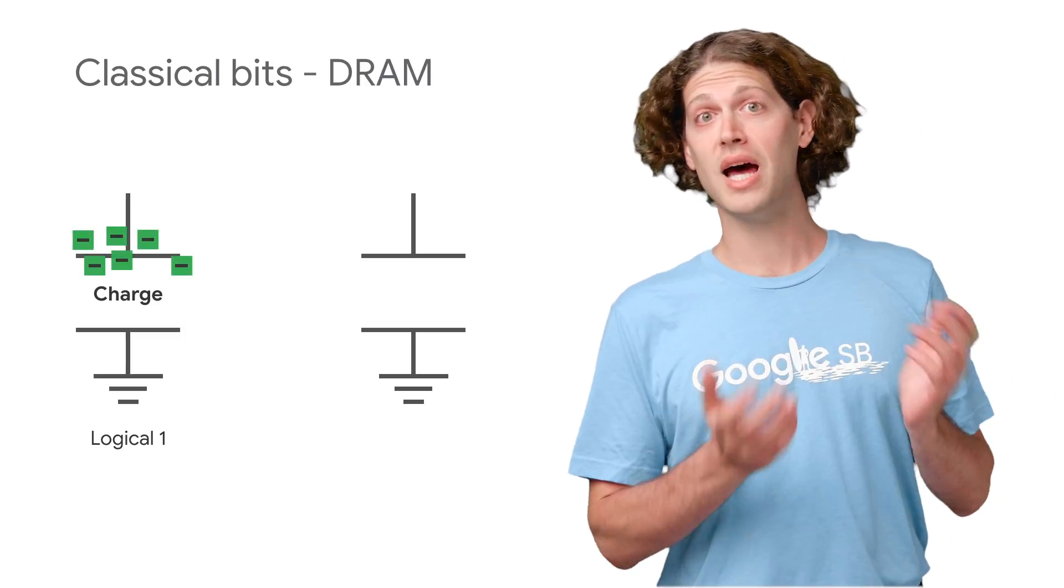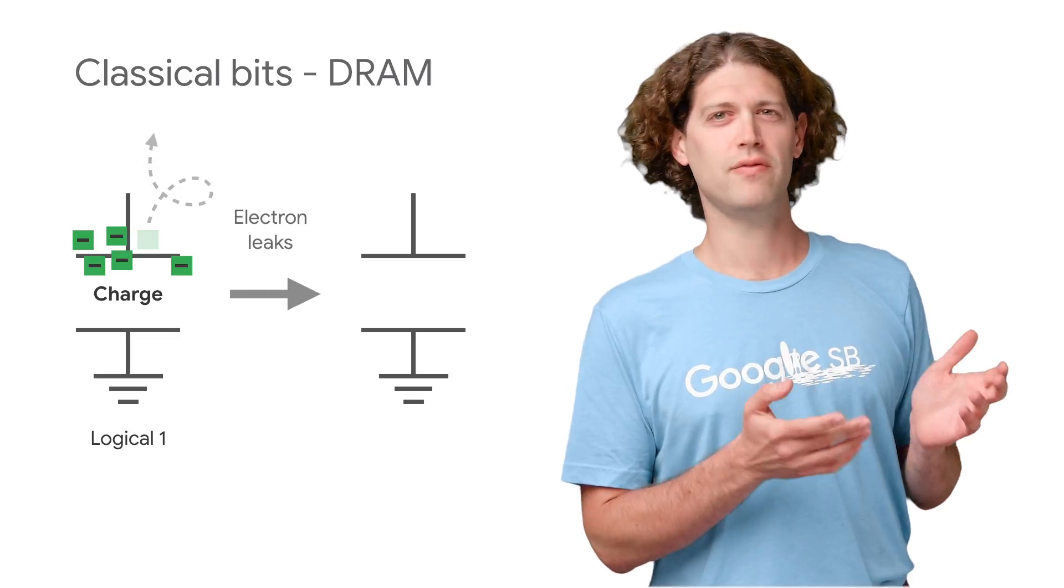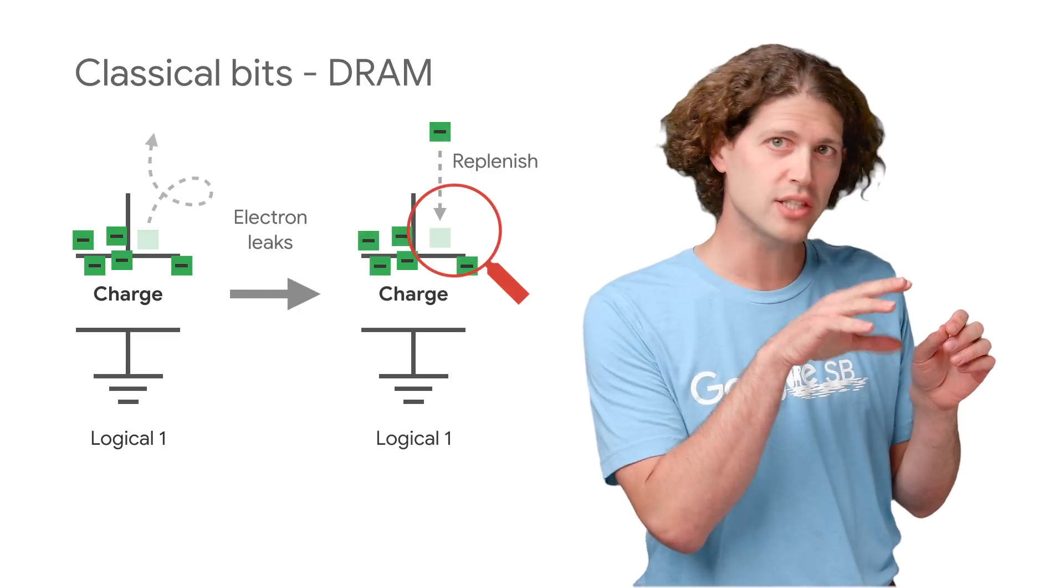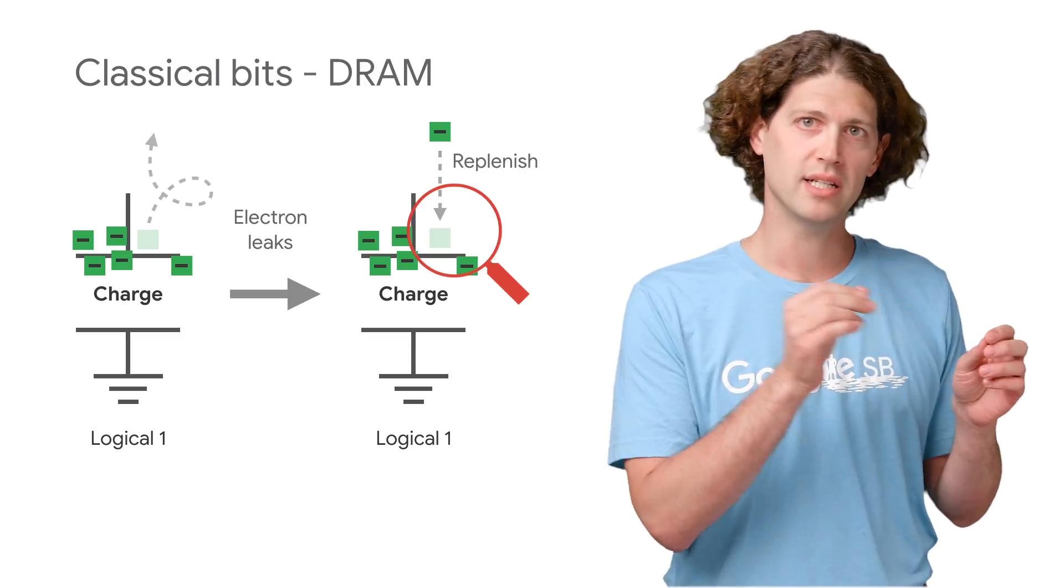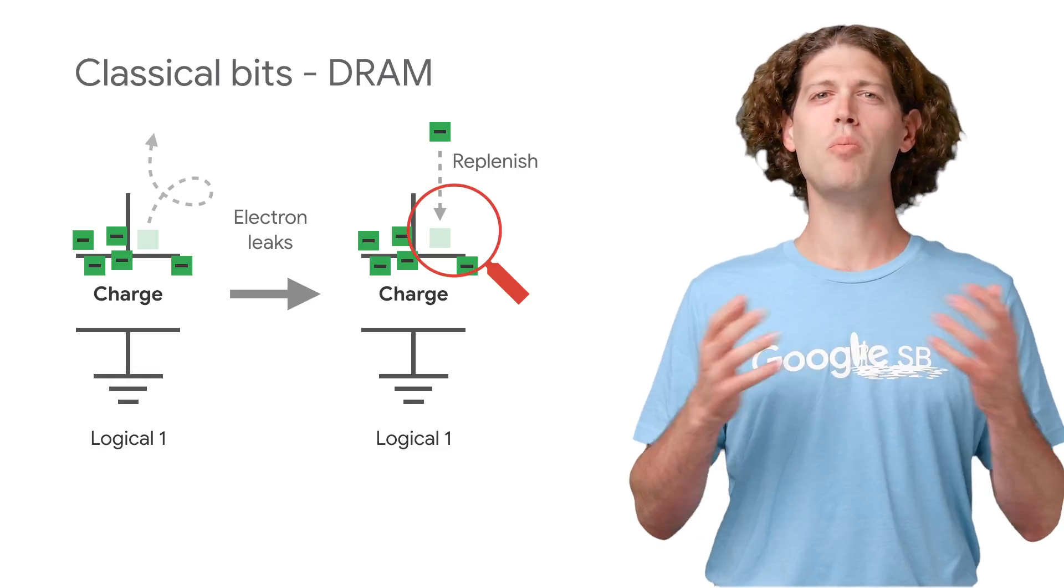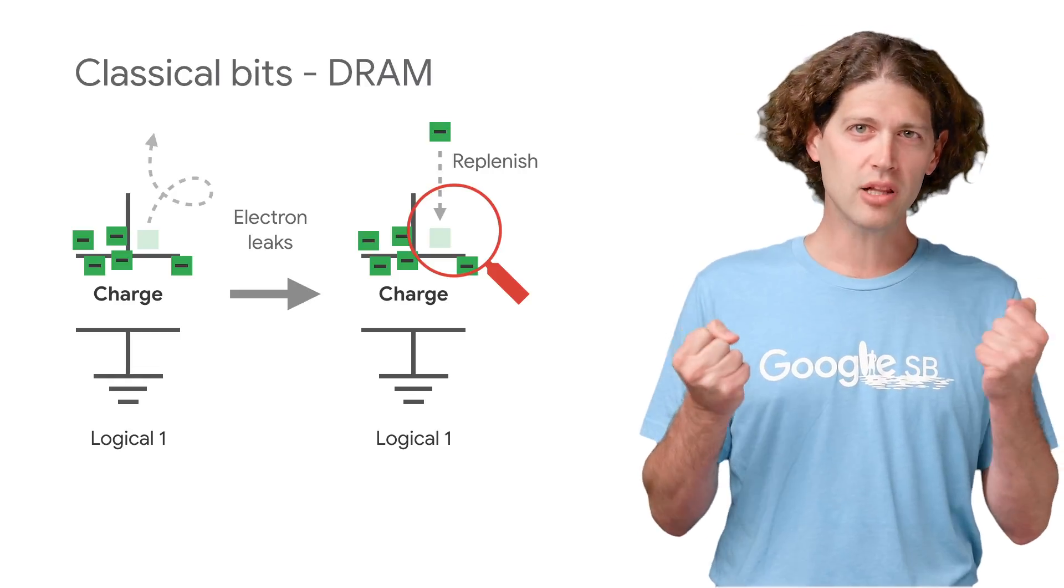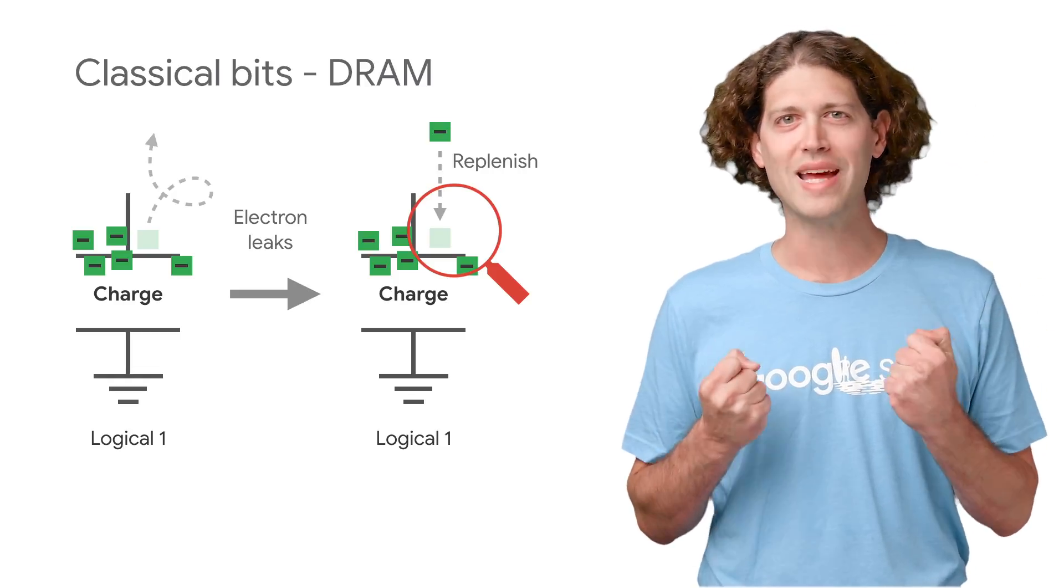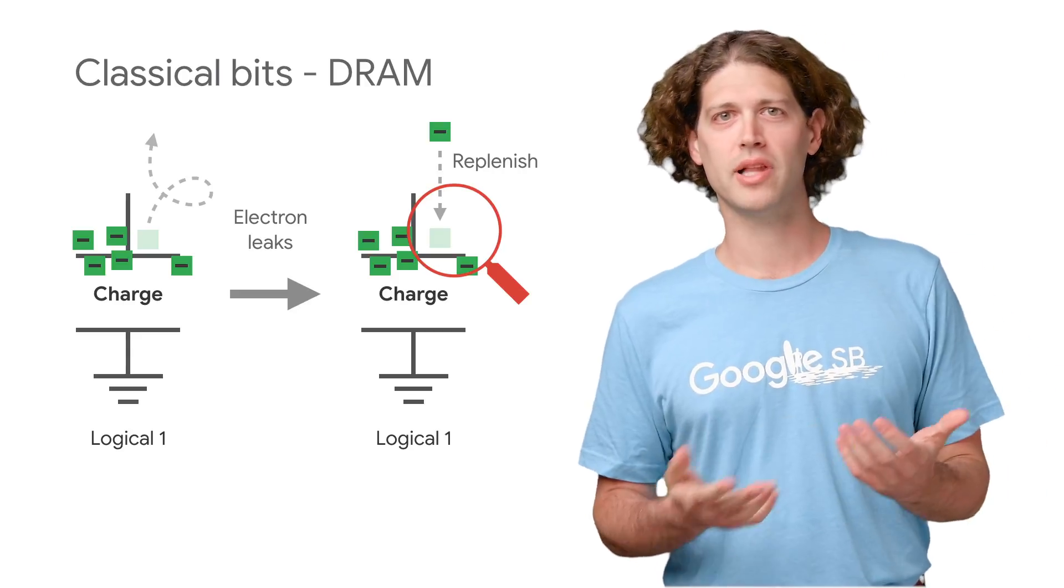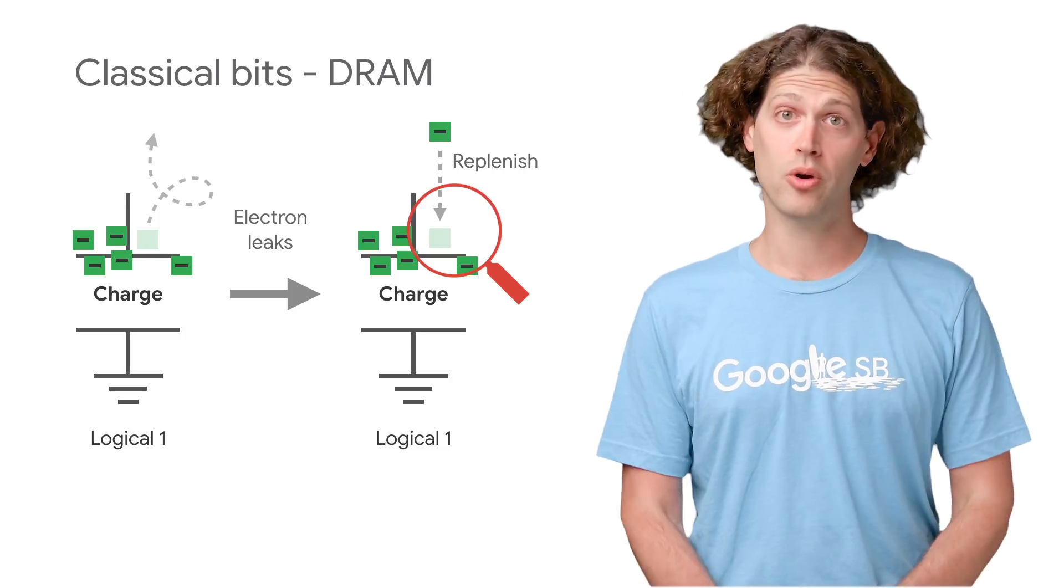By using lots of electrons, we're okay if a few leak out. DRAM circuits periodically check the logical level and replenish missing electrons. Encoding one logical bit in the state of so many physical bits gives classical information a level of reliability that we take for granted. We don't have to think about all those electrons bumping around when we write our programs.